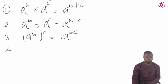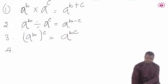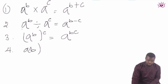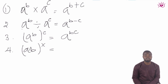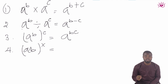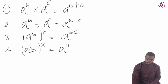The fourth law is numbers with powers and brackets. So that is a times b, all raised to the power x. When you have two numbers multiplying themselves, having one power outside the bracket, just distribute the powers among those two numbers. So that would give us a raised to the power x times b raised to the power x.